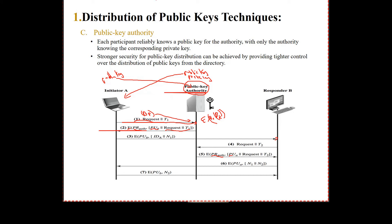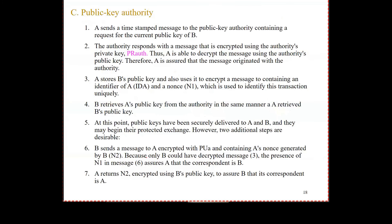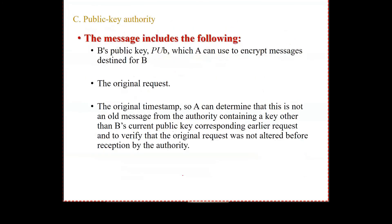It's still not right because everyone can ask for another person's key. If you know the public key for the public authority, you can ask for anyone's key. We want it more organized and more secure. The message received from the public authority includes the public key for Bob, the original request you sent, and the timestamp of the response.